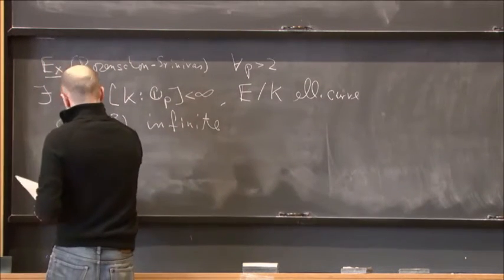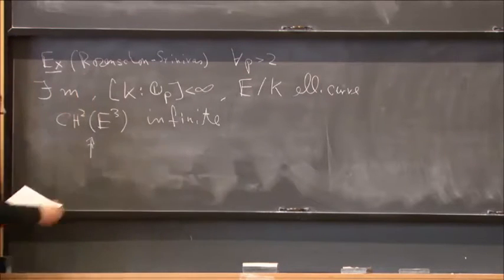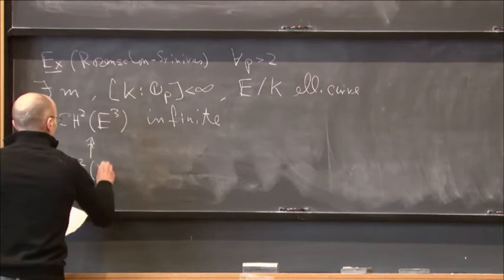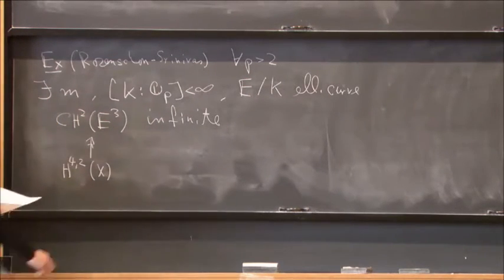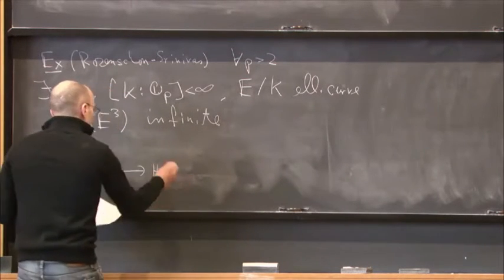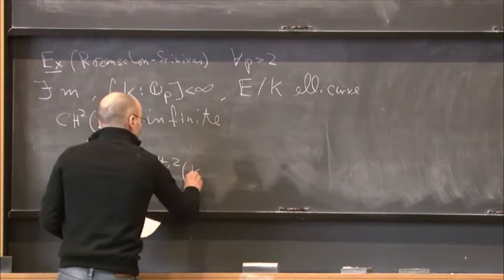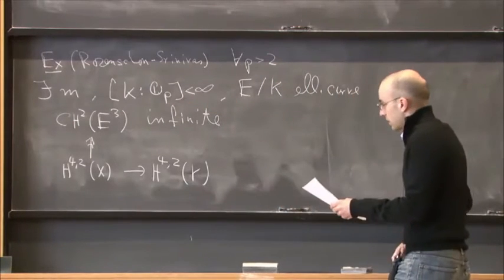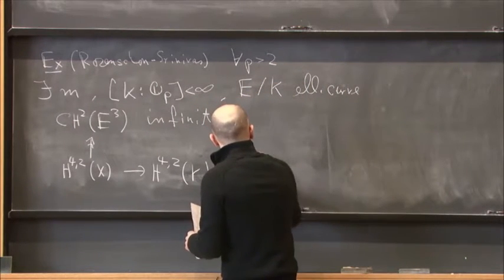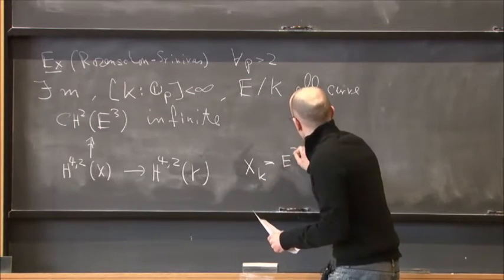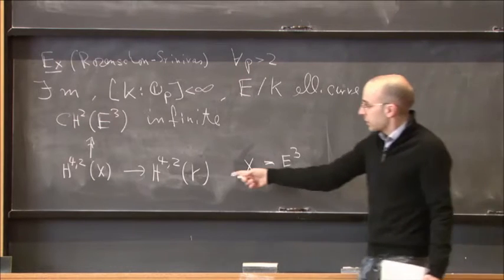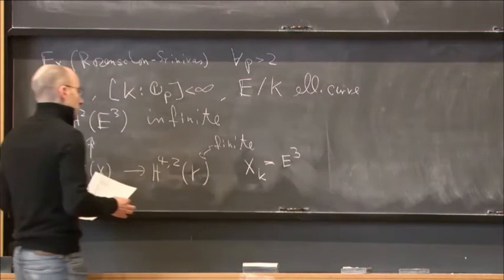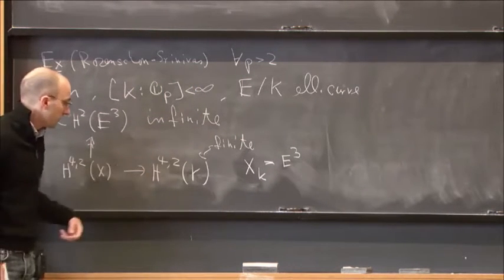What does it mean for our problem? If we believe that there exists a good motivic cohomology of X, then there should be a surjection from H^{4,2} of X to this group. Then we consider the specialization map to H^{4,2} of Y, where X is a certain model with generic fiber E^3. Of course, we expect this motivic cohomology group to be finite, so in general this map cannot be injective.